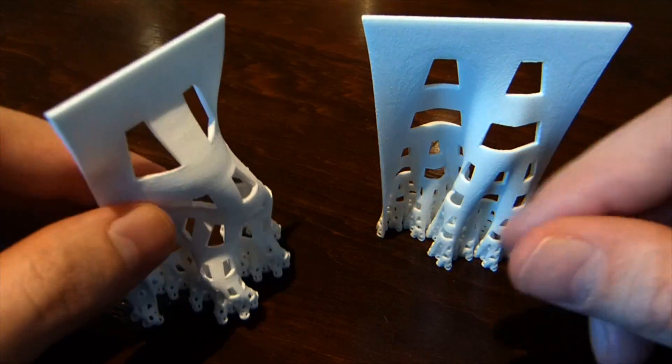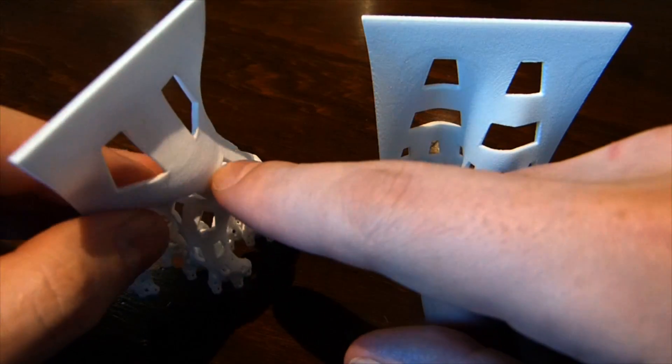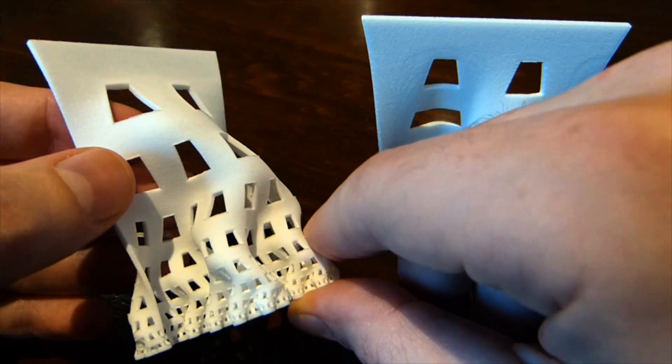So with the Developing Dragon curve you have a line segment that gets replaced by two line segments at right angles to each other, and then you repeat that process on each of these new line segments and so on.